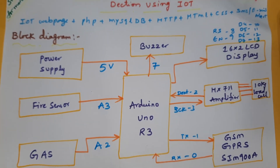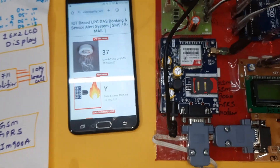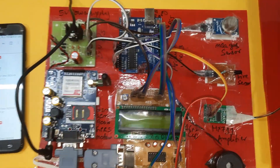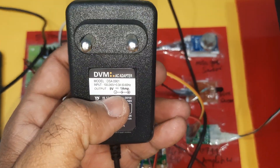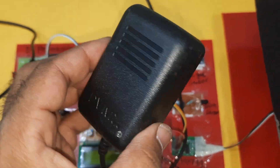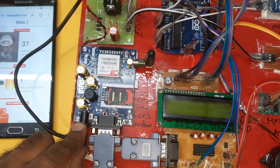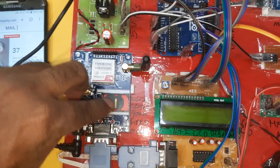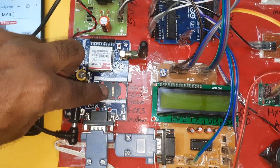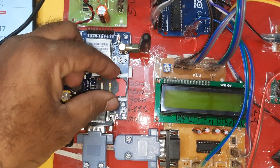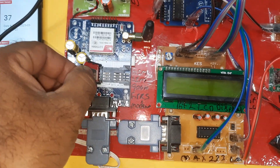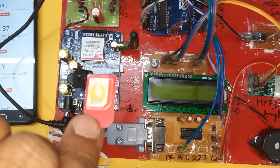This is our total block diagram and web page of the project. In the hardware, we are using a 0 to 9 volts, 1 ampere adapter power source connected to the GSM module. We are using a SIM card — Idea, Airtel, Vodafone, or BSNL — supporting 2G, 3G, or 4G.